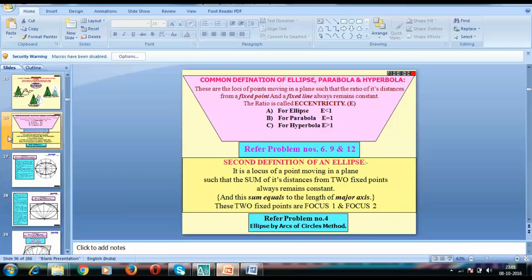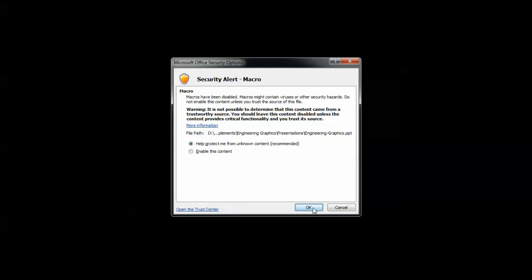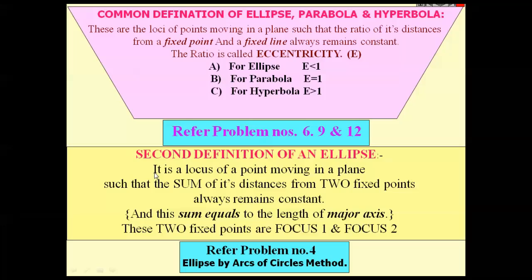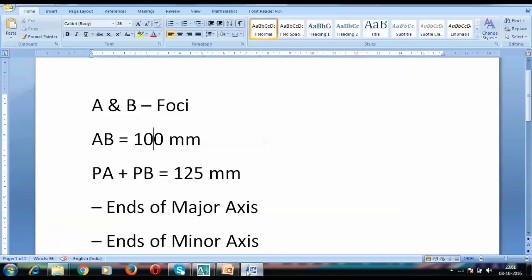I'm going to show you a definition of ellipse which is really going to change your mind. The definition says: it is a locus of a point moving in a plane such that the sum of its distances from two fixed points always remains constant. The sum equals the length of the major axis. So PA plus PB has been given as 125 millimeters, and this 125 millimeters is none other than your major axis.